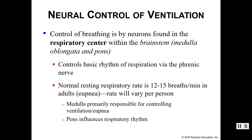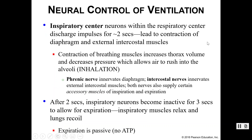While the medulla controls ventilation, the pons influences the rhythm of respiration. Your inspiratory center has neurons that discharge impulses for about two seconds, and this leads to contraction of the diaphragm and the external intercostal muscles — your inspiratory muscles. Contraction of the breathing muscles increases your thoracic cavity volume, which decreases the pressure within your thoracic cavity, allowing air to rush into your lungs during inhalation.